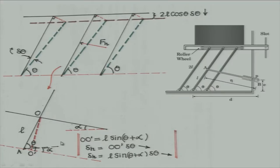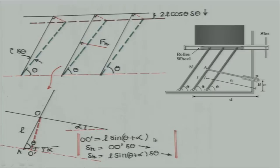When we provide a virtual rotation delta theta, at point O where the force acts on the hydraulic cylinder, the displacement along this direction will simply be L sin(theta plus alpha) times delta theta. Alpha can easily be found because all the dimensions are given — we can find out the value of alpha.